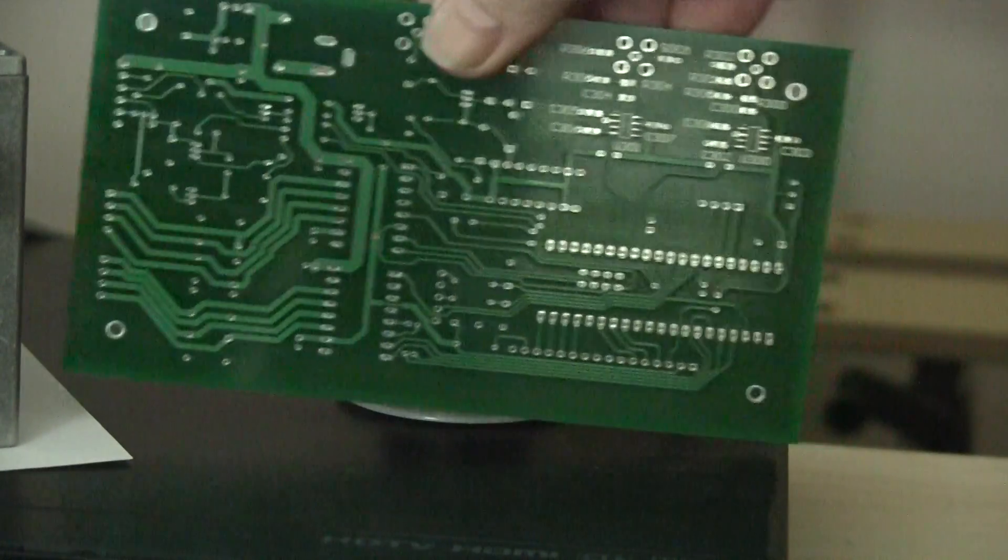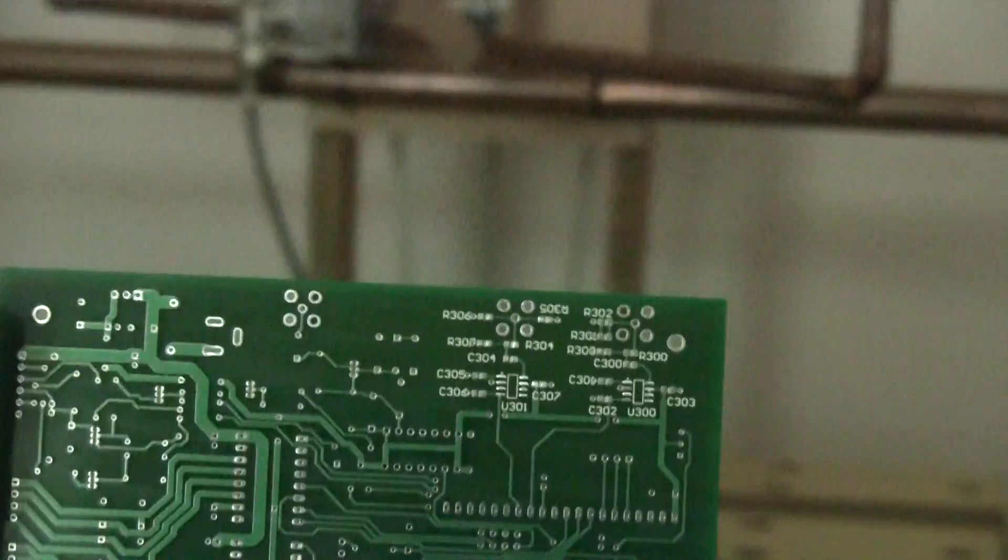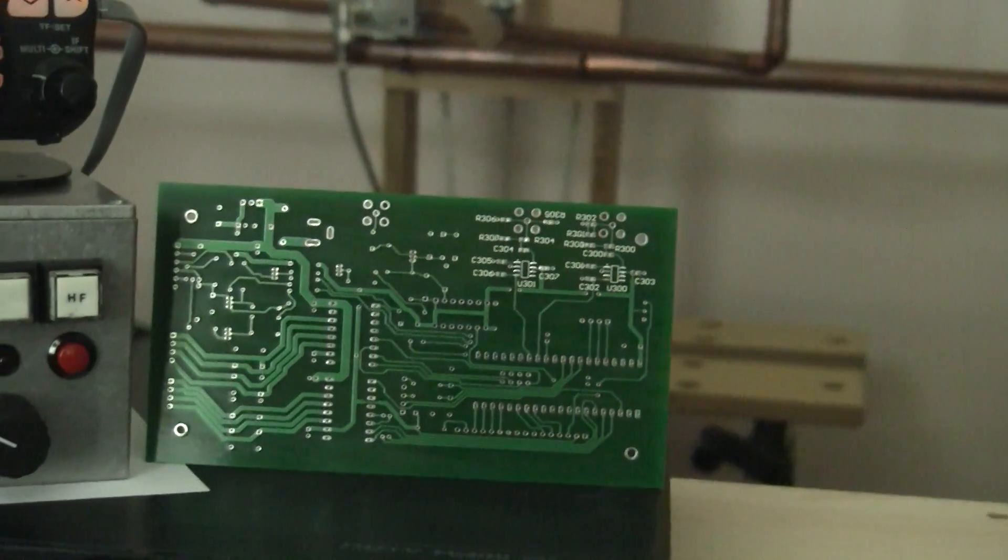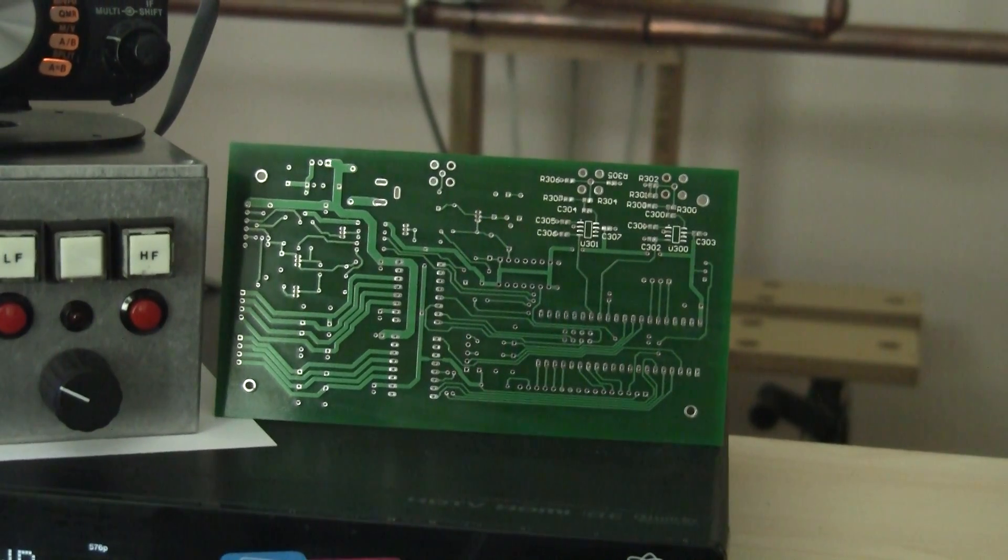On the back of the board, by the way, there's some surface mount components for the RF detection stuff in that corner. Not too hard to put down. And again, I may offer a service whereby the surface mount components are actually installed, ready to go.